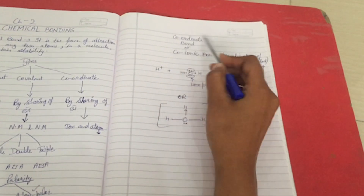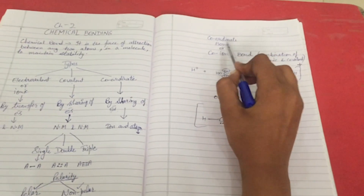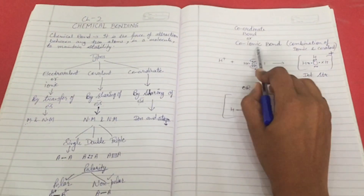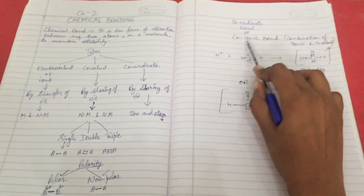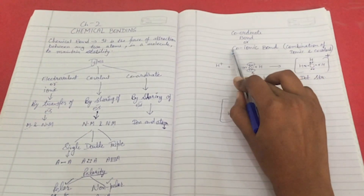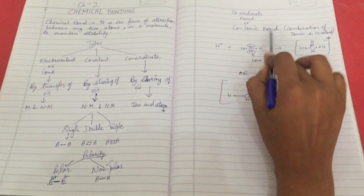We will now discuss the third type: coordinate bond. It is also known as coionic bond because it has the properties of both covalent as well as ionic bond.